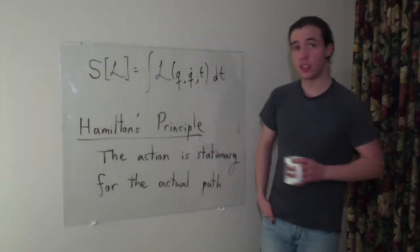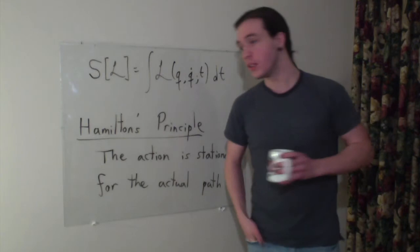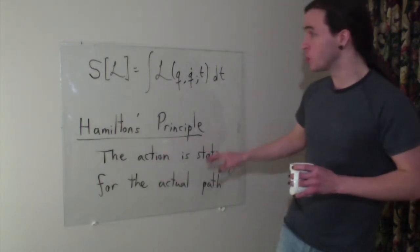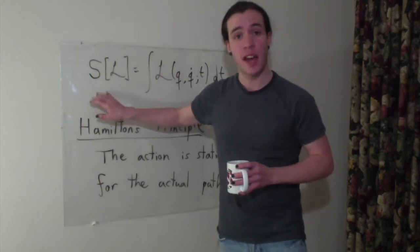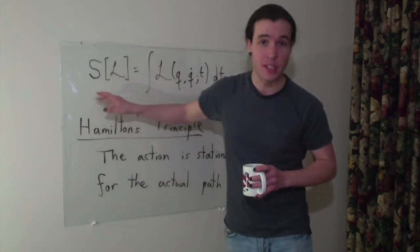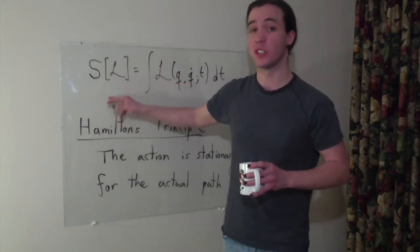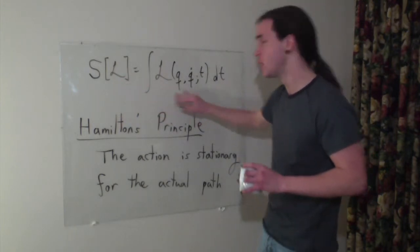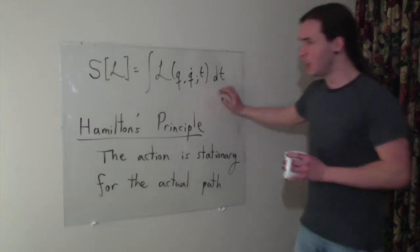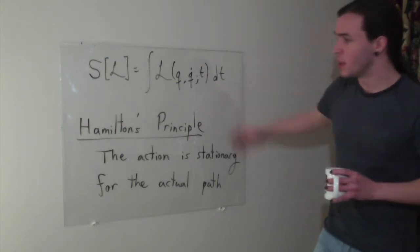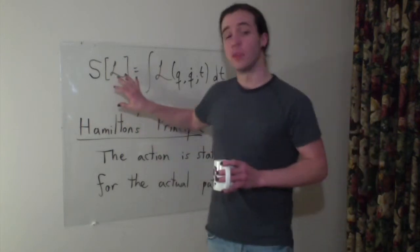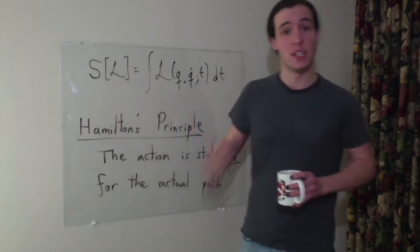To arrive at these equations of motion, the differential equations, you need an assumption, a principle. And this would be Hamilton's principle. So first we define something known as the action. This action is something known as a functional. It's a function that takes in an argument which is itself a function. So the action is defined as being the integral of the Lagrangian over time. So Hamilton's principle states that for the actual motion of the system, this integral will be stationary. And what that means is that it's going to be an extremum.